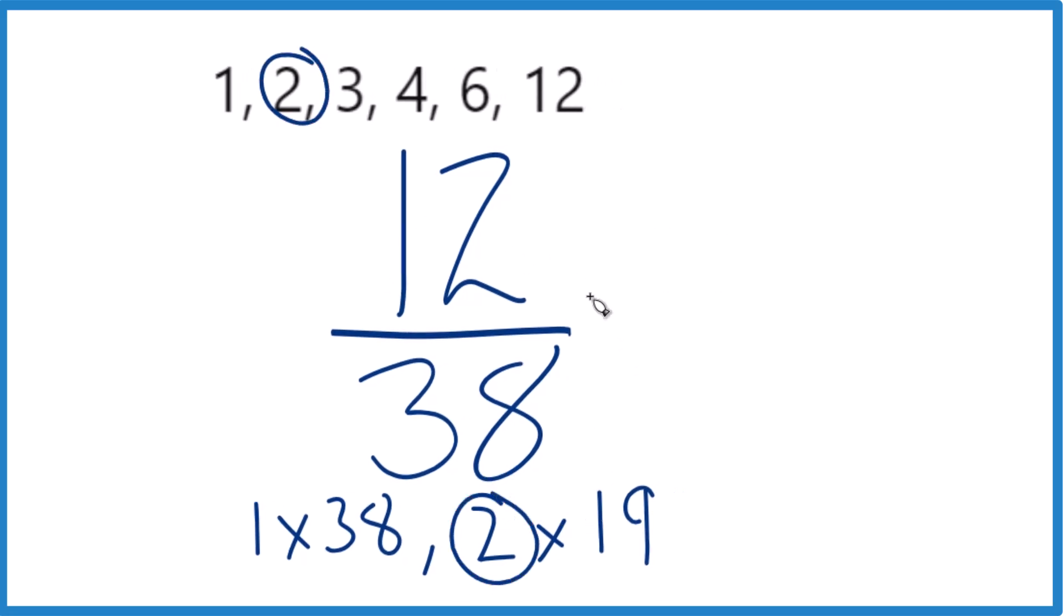So we're going to divide 12 by 2, that gives us 6, and then if we divide 38 by 2 we get 19. 19 plus 19, that's 38, and we end up with 6 19ths.